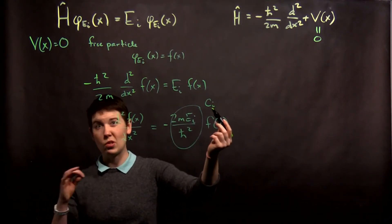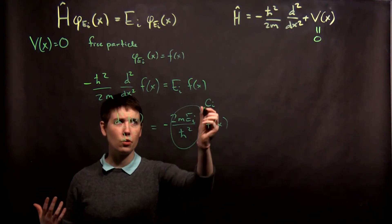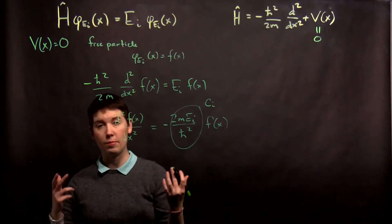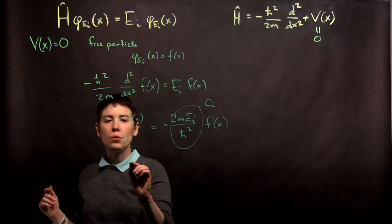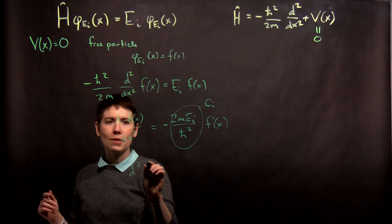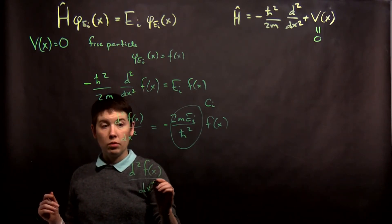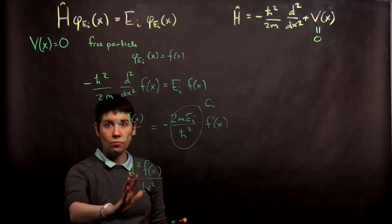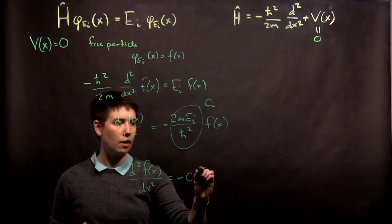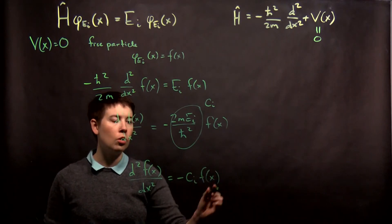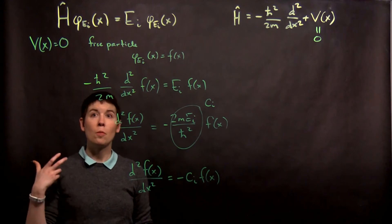So to remember this I'm just going to keep this sub i here. If you have the habit of having messy handwriting where that i gets too big and you start to think that means square root of negative one call this c sub k whatever you want. So we're now left with my second derivative of this function and again single variable one dimensional function is equal to negative c_i times that function. The whole goal right now is to figure out what this function must be.